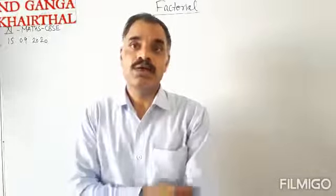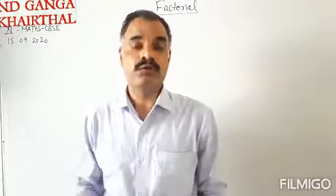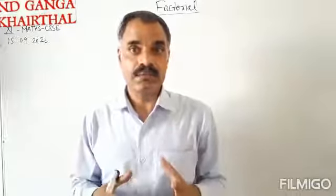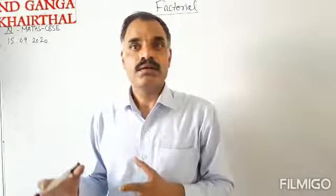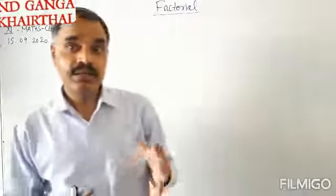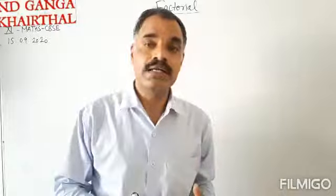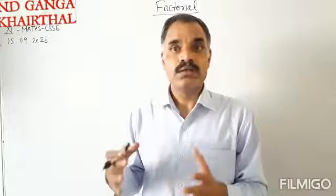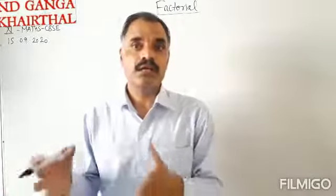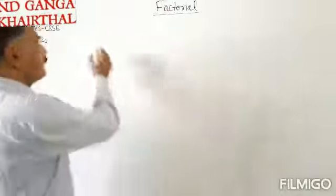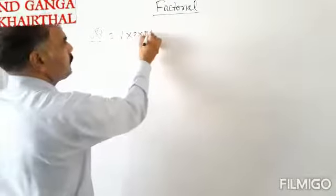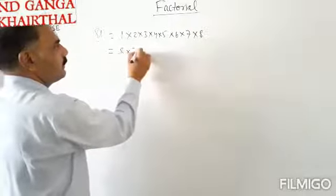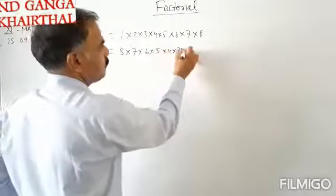Now what does mean by the factorial? Factorial is the continued product of the natural numbers up to n. Factorial n is the continued product of the natural numbers from 1 to n. Suppose we are finding factorial 8. Factorial 8 is equals to 8 into 7 into 6, and so on, up to 1. That is: 1 into 2 into 3 into 4 into 5 into 6 into 7 into 8, or equivalently 8 into 7 into 6 into 5 into 4 into 3 into 2 into 1.